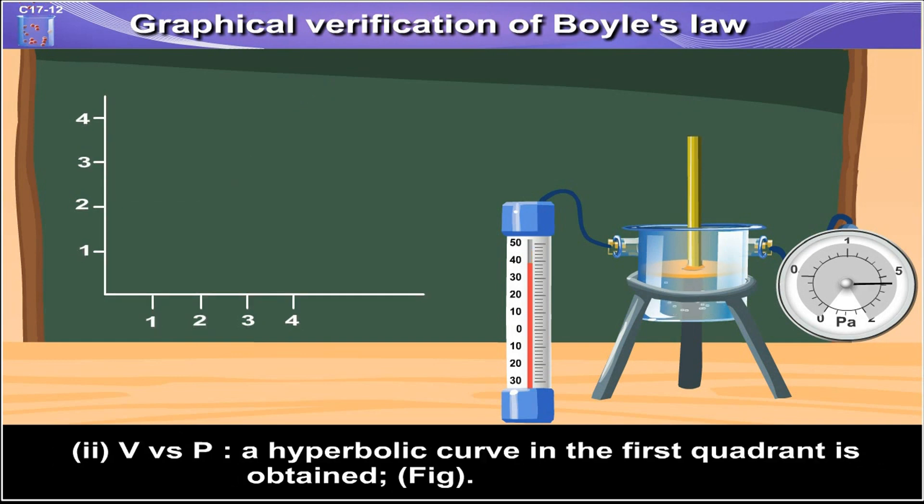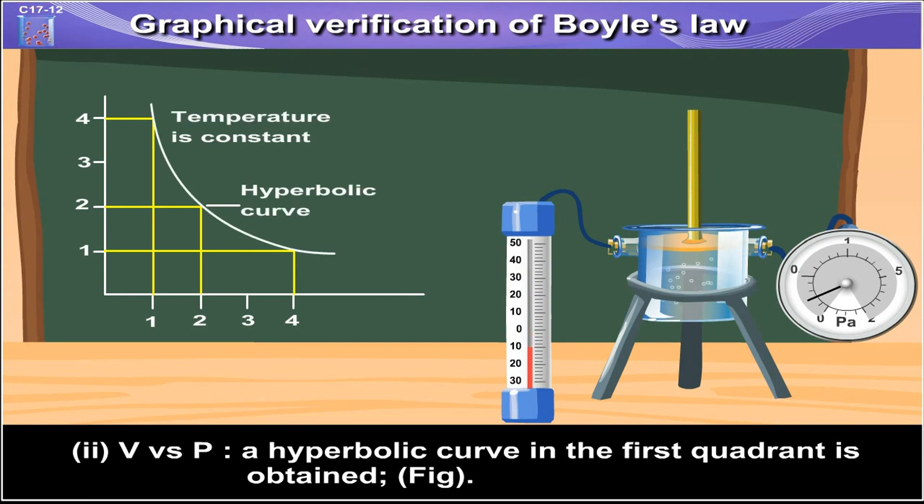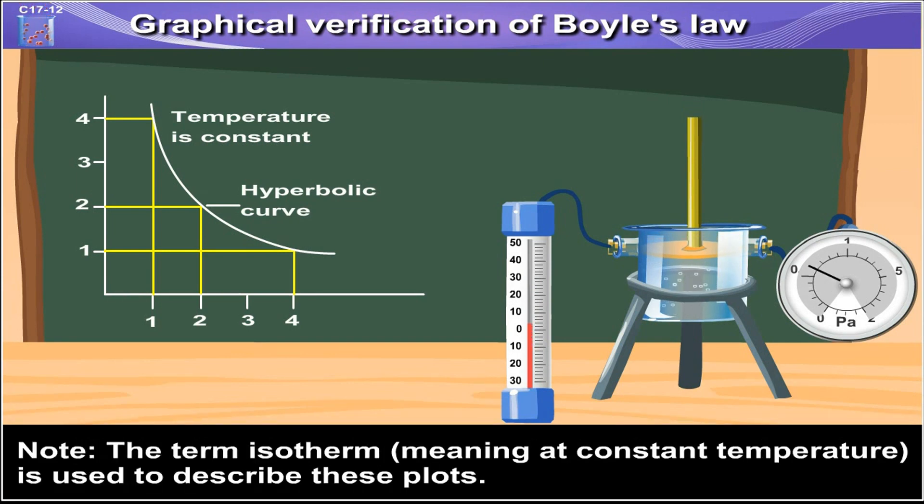Second, V vs. P: a hyperbolic curve in the first quadrant is obtained, as seen in the figure. Note, the term isotherm, meaning at constant temperature, is used to describe these plots.